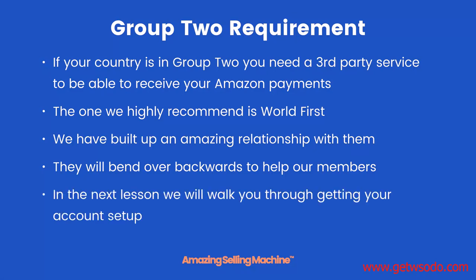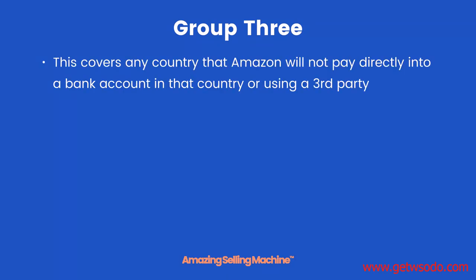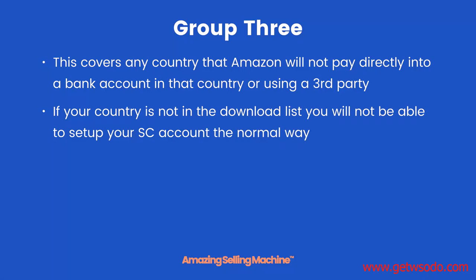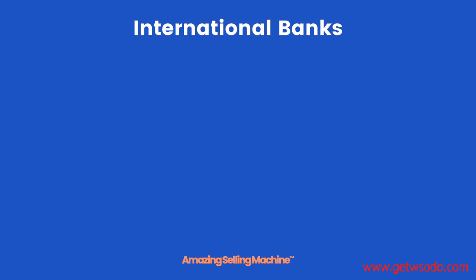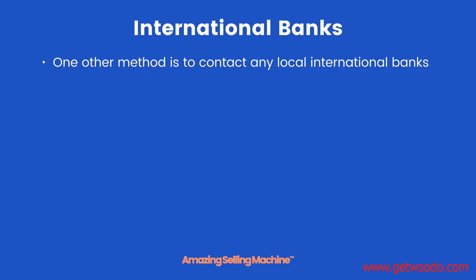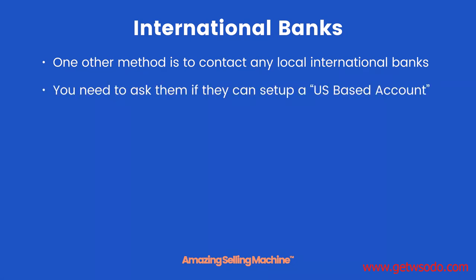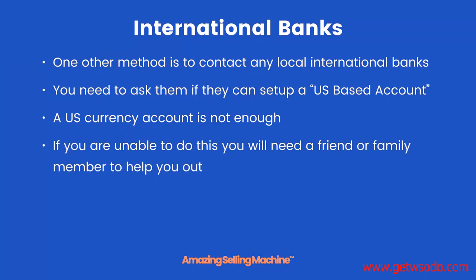Group three covers any country that Amazon will not pay directly into a bank account in that country, and will not allow a third-party service either. If your country is not in the PDF download below this lesson, you will not be able to set up your Seller Central account the normal way. You will need to open a bank account in one of the group one countries, or use a family friend or relative. One other option is to contact local international banks and ask if they can set up a US-based account — note that a US currency account is not enough; it must be a US-based account.